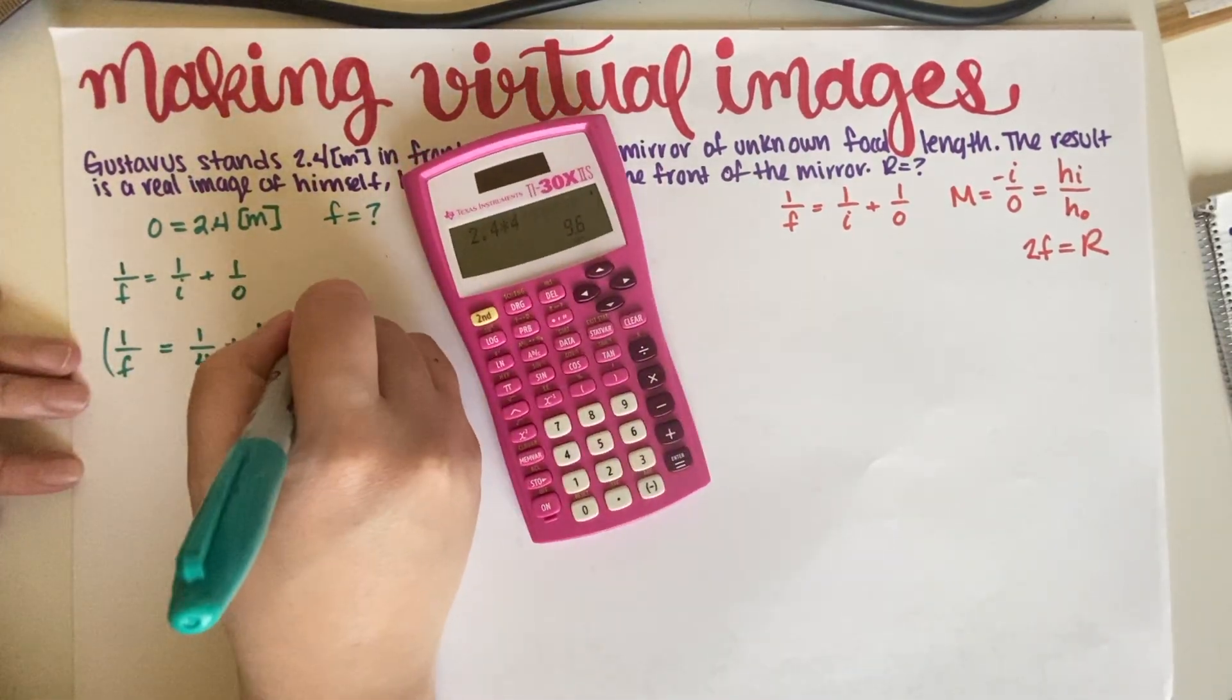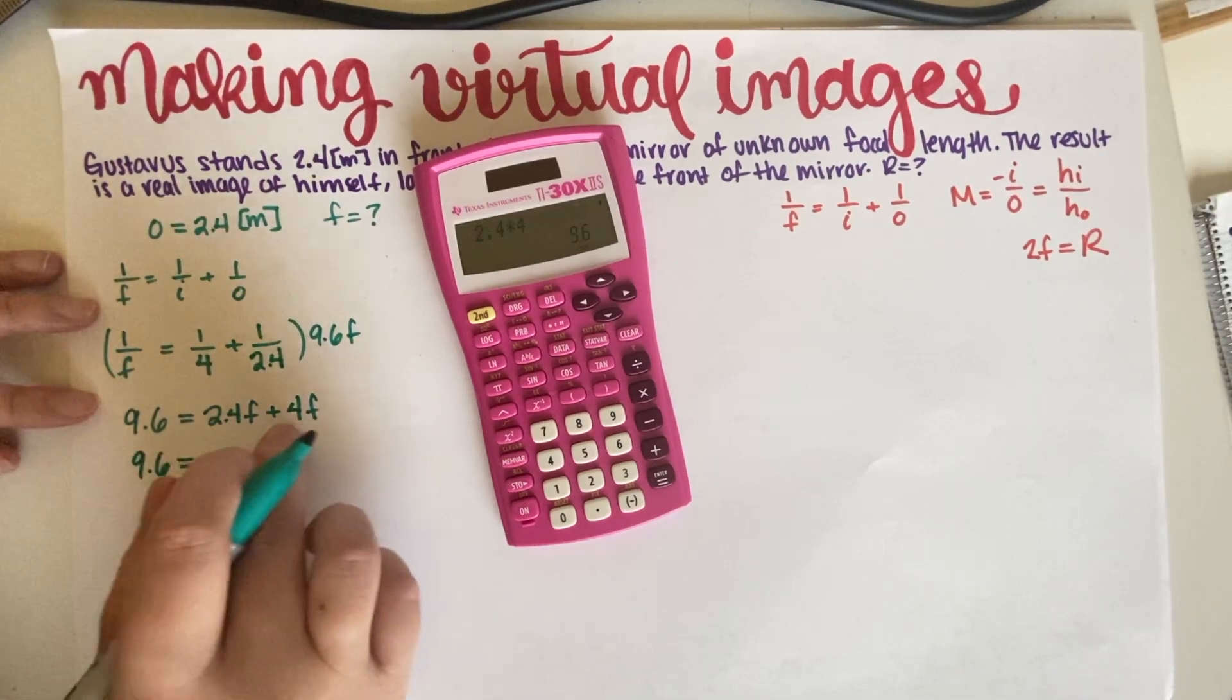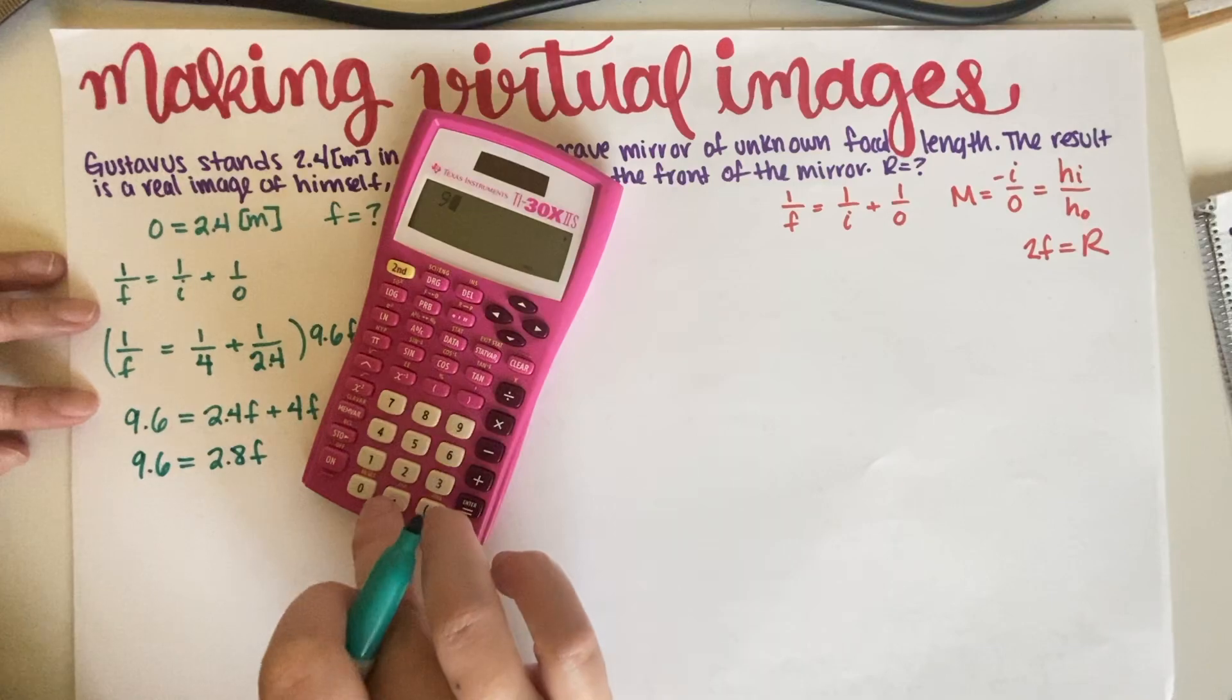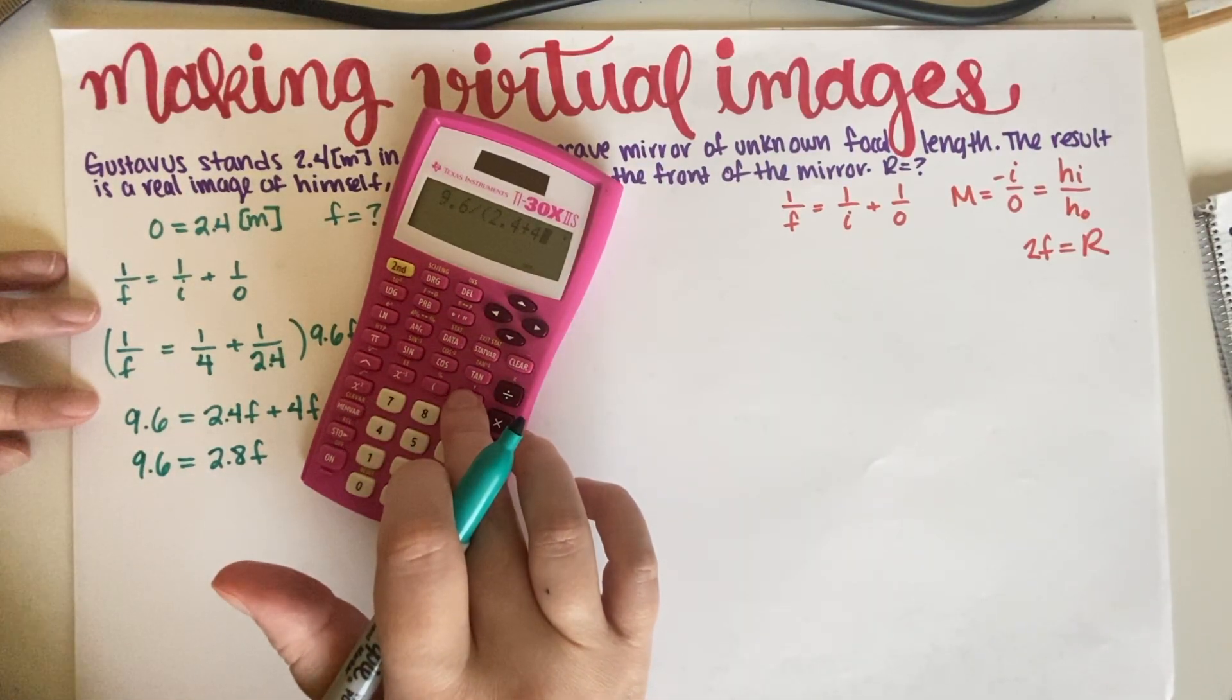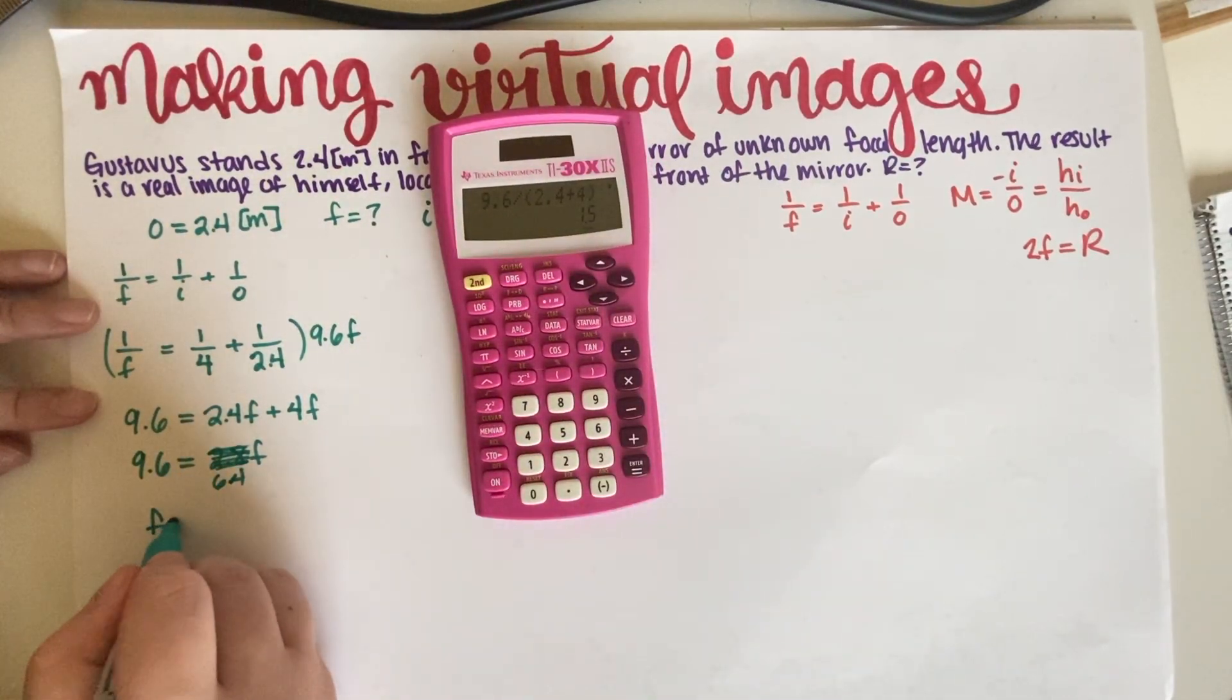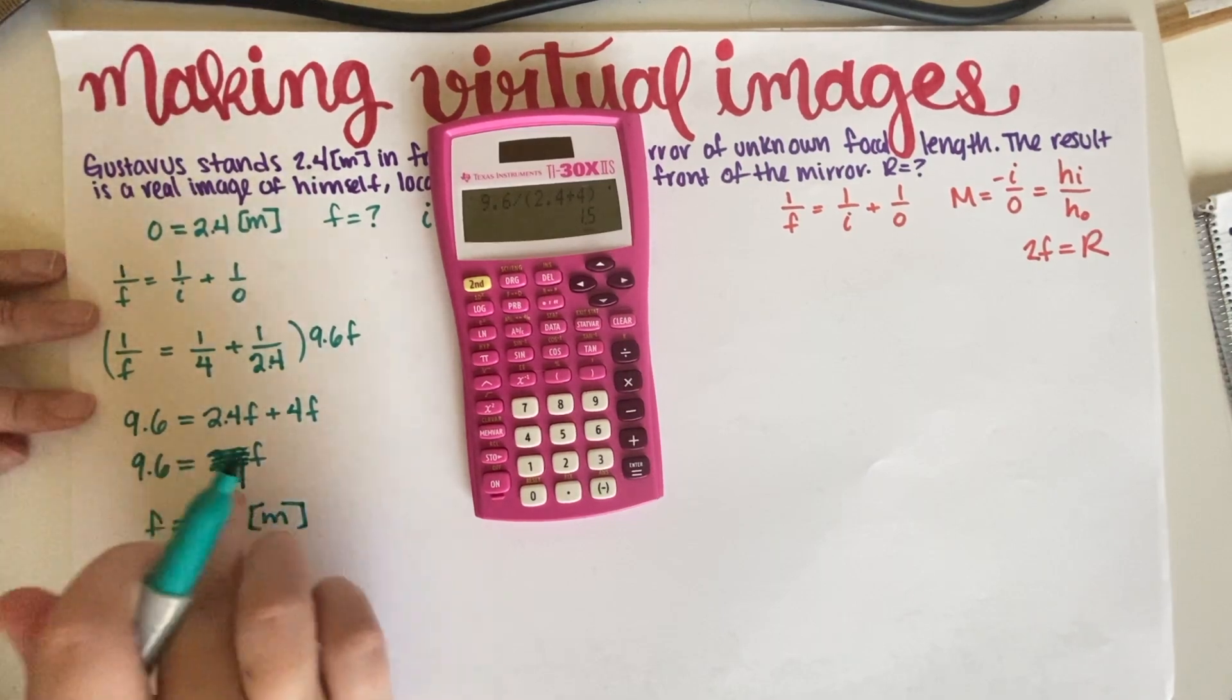So whatever way you want to solve this, whatever way works for you, that's fine. I have my own way, so 1 times 4, 9.6 F. So 9.6 is equal to 2.4 F plus 4 F. So 9.6 is equal to 2.8 F, and then 9.6 divided by... oh, this is not 2.8. This is 6.4. And then F is equal to 1.5 meters. So 4 plus 2.4 is equal to 6.4. And then if you divide these two, you get 1.5.